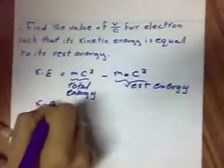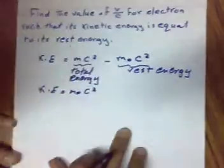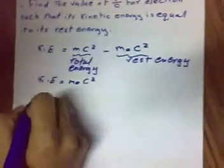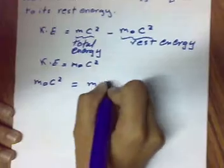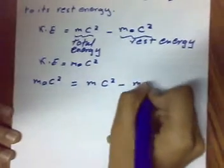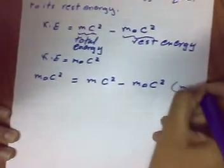Kinetic energy equals rest energy. So m0c squared equals mc squared minus m0c squared. And we add to both sides m0c squared.